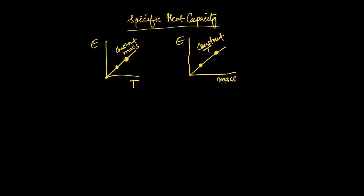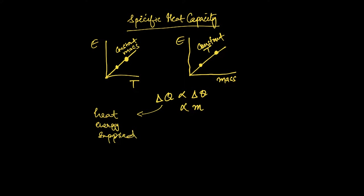So what you're going to see is that the change in energy required is proportional to the change in temperature, and it's also proportional to the mass. Combining these, and where Q is used to denote the heat energy supplied, this can be written as: the change in energy equals m times c times delta theta, where c is our constant of proportionality.